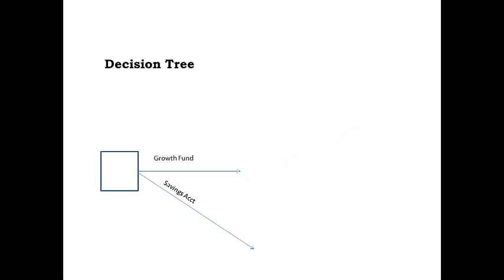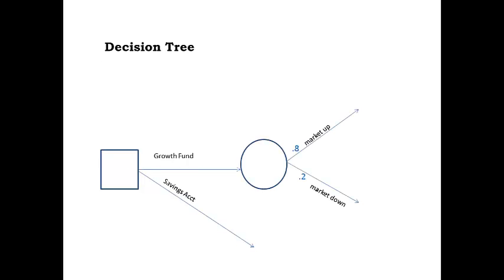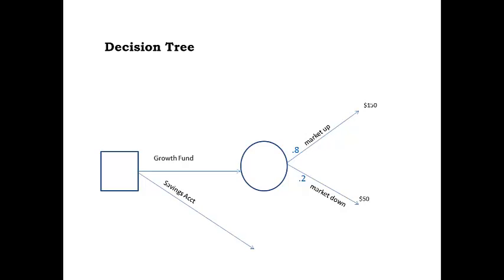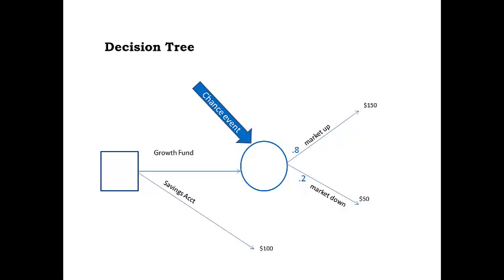For our example, first the decision maker chooses where to invest — either the growth fund or the savings account. Then comes the chance that the market will go up or down, with a probability of 80% that the market will go up and 20% chance that it will go down. After that, the decision maker will see a payoff of either $150 or $50 from the growth fund, or $100 from the savings account.